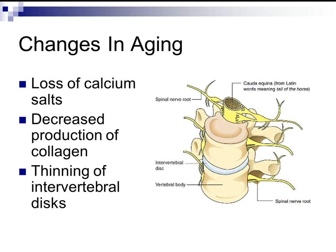Changes in aging include loss of calcium salts causing fragile bones, decreased production of collagen, and thinning of the intervertebral discs, causing the vertebrae to compact against each other.